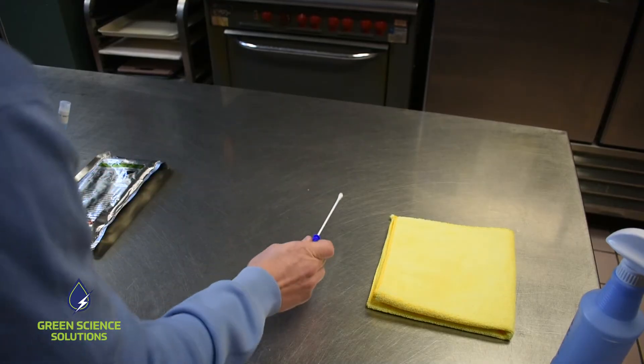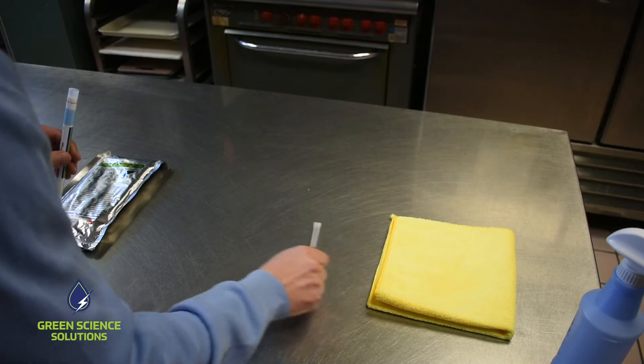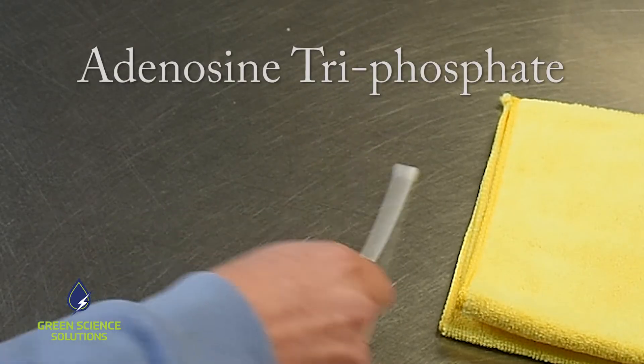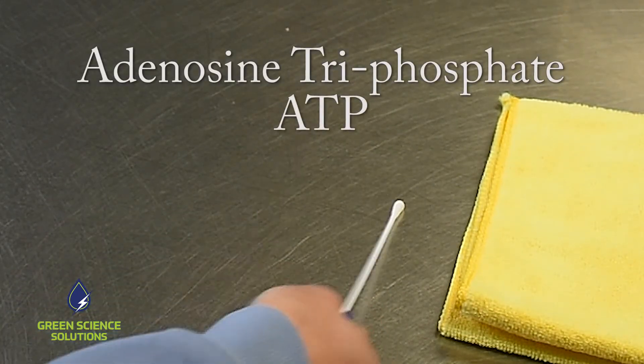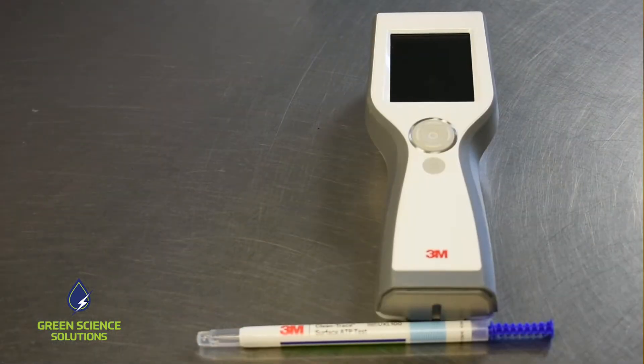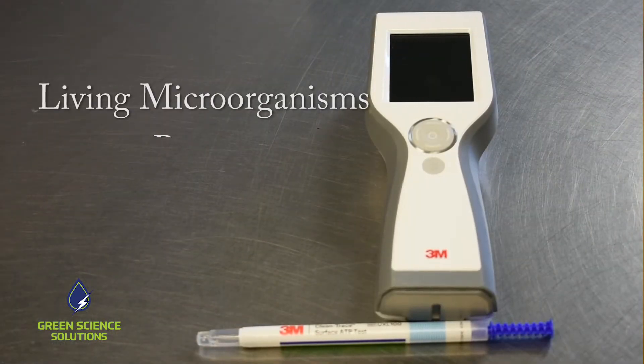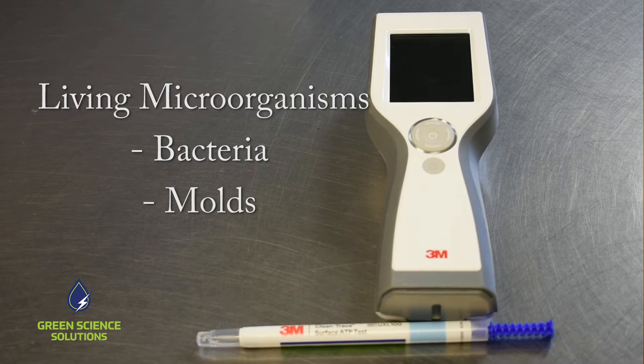You simply swab the surface area you intend to clean. By doing so, you are now picking up adenosine triphosphate, also known as ATP. This is given off by living microorganisms such as bacteria, molds, or fungi.